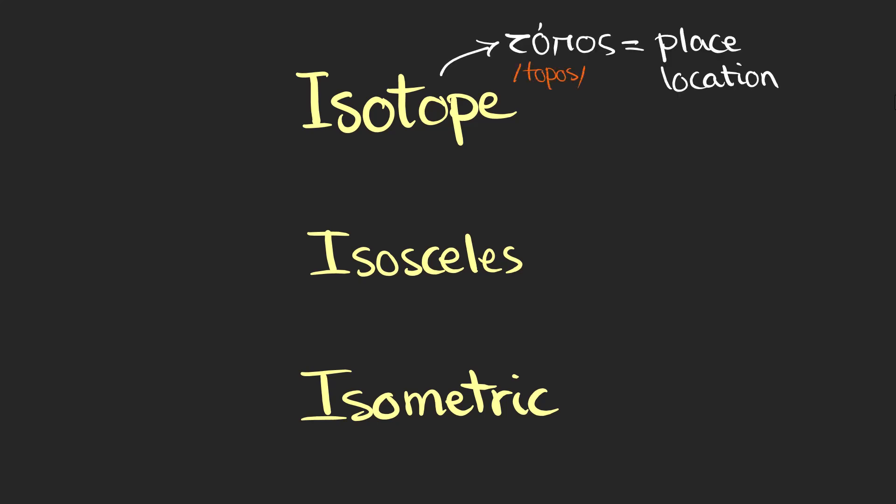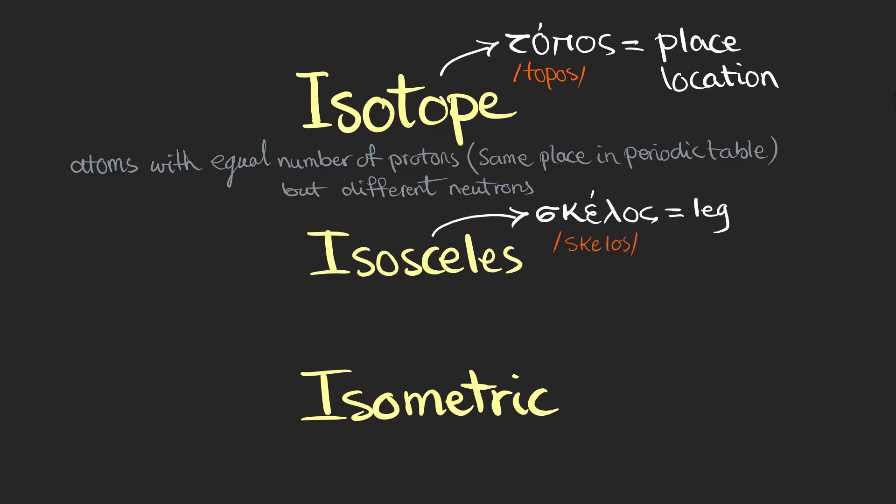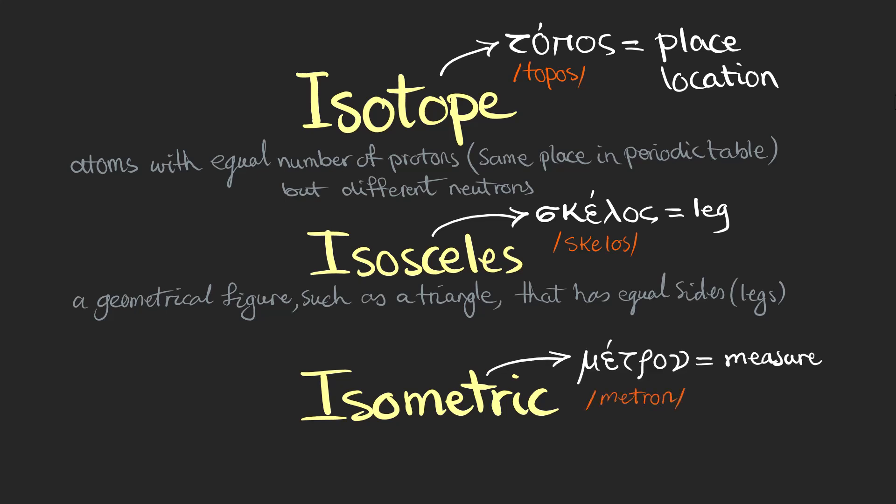Topos is from the Greek root which means place or location, and this term is used for atoms with equal number of protons which have the same place in the periodic table but different neutrons. In the next word, skellos means leg and an isosceles triangle is a kind of triangle that has equal sides or legs. And also metron means measure. An isometric refers to a transformation in geometry that preserves distance.